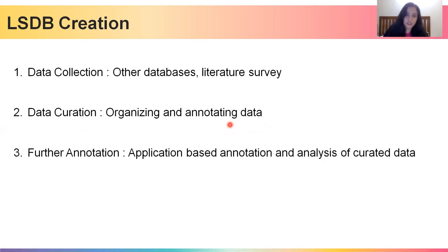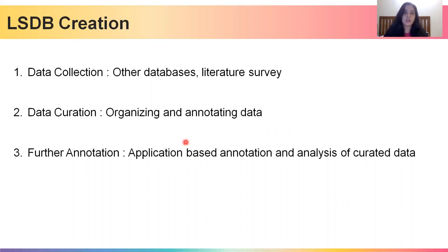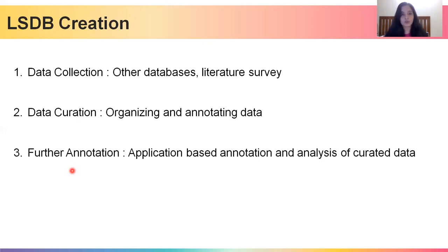The next step is data curation. Once you have your papers or data, you sort through it, organize it in a meaningful manner, and annotate it with relevant information. The third step is further annotation — now that you've organized and annotated your data, you might perform a small analysis to address a very specific question, such as the prevalence of one type of cancer in one particular population, then present and share those results.